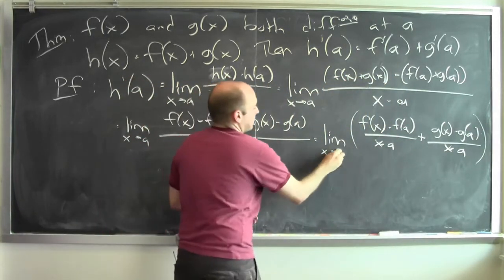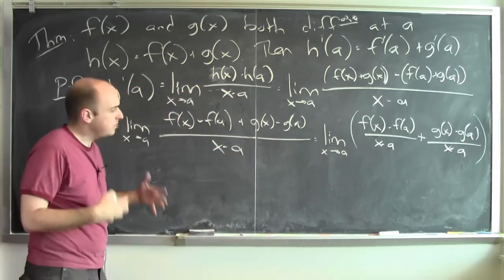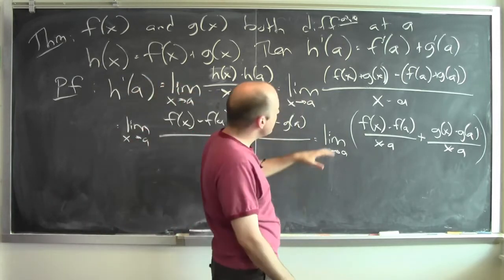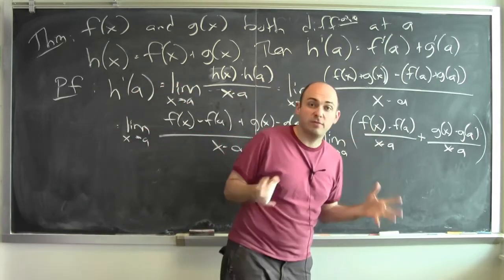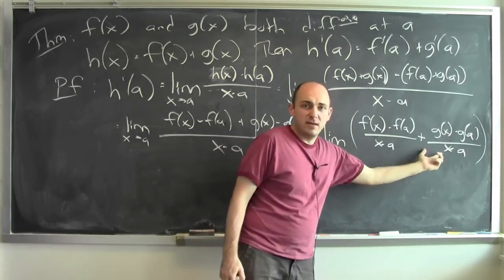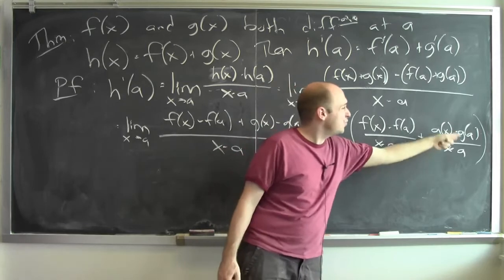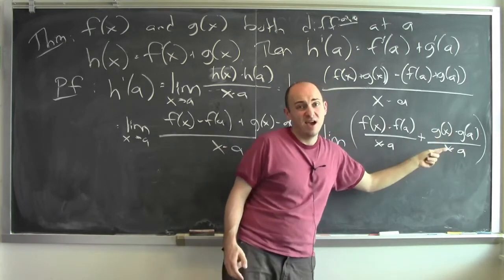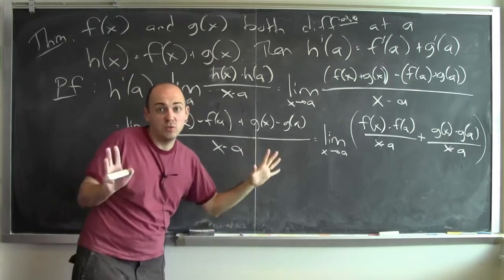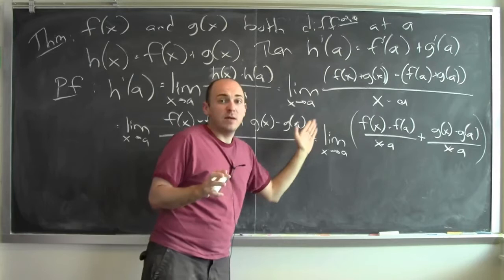So this is the limit as x goes to a of f of x minus f of a over x minus a plus g of x minus g of a over x minus a. One of the rules for calculating limits is that the limit of a sum is the sum of the limits, provided the limits exist. This first part is really the derivative of f at a, and the second is the derivative of g at a. And I assumed that f and g are both differentiable at a, so those limits do exist.